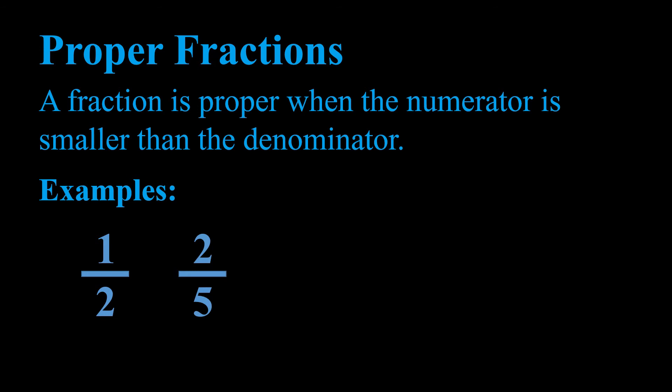Another example is two fifths, which we can read as two divided by five, or two out of five. The numerator, two, is smaller than the denominator, five. It doesn't matter how large the numbers are — here we have 17 out of 20, written as a fraction, and the 17 which is our numerator is smaller than the 20 which is our denominator, so this also meets the criteria of a proper fraction.